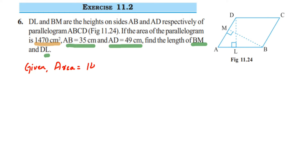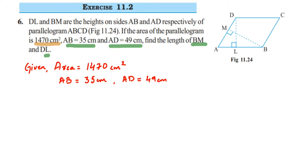So from the question: area = 1470 cm², AB is the base with DL as its corresponding height, and AD = 49 cm. We need to find DL and BM using the formula for area of a parallelogram, which is base × height, applied twice with the two different bases.